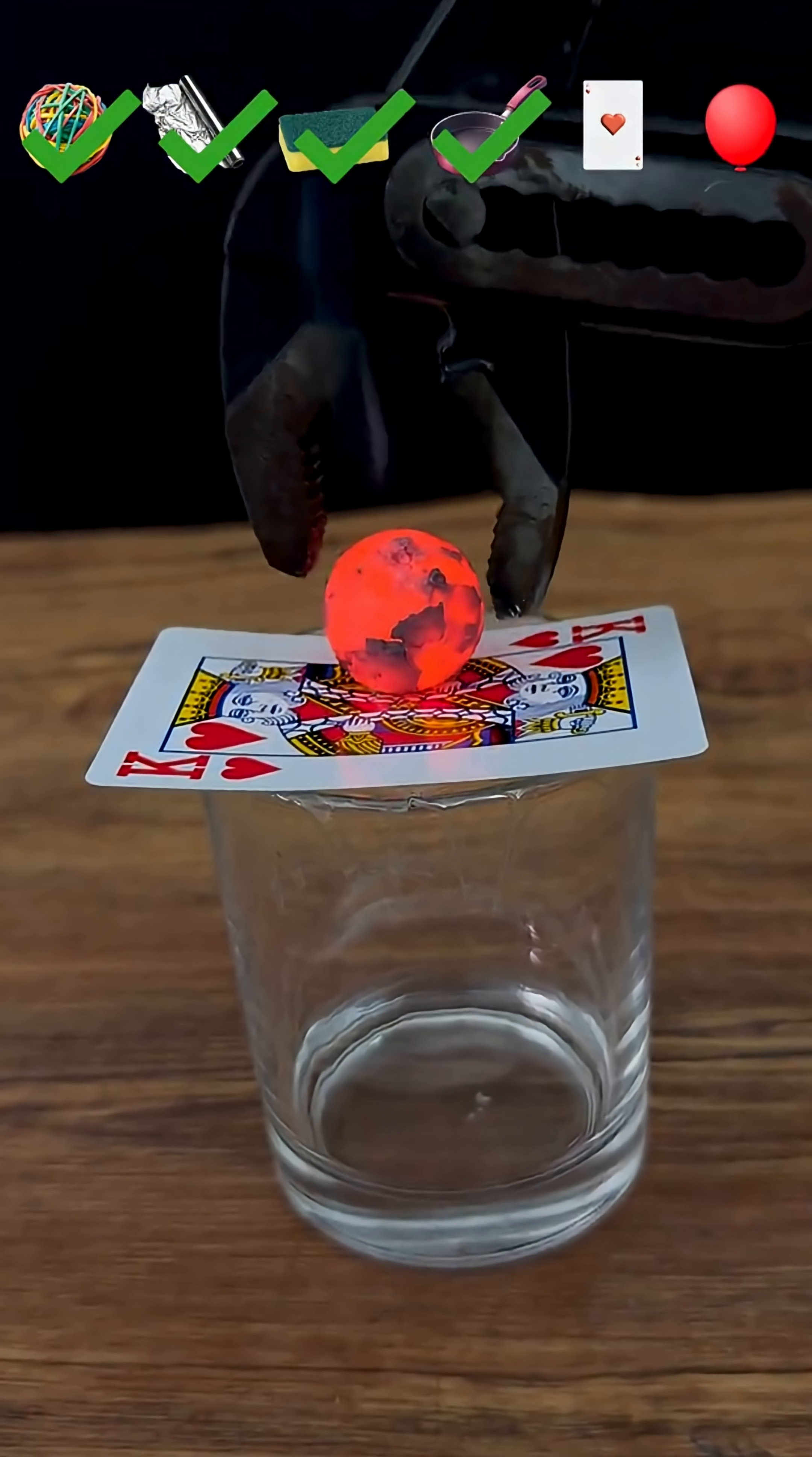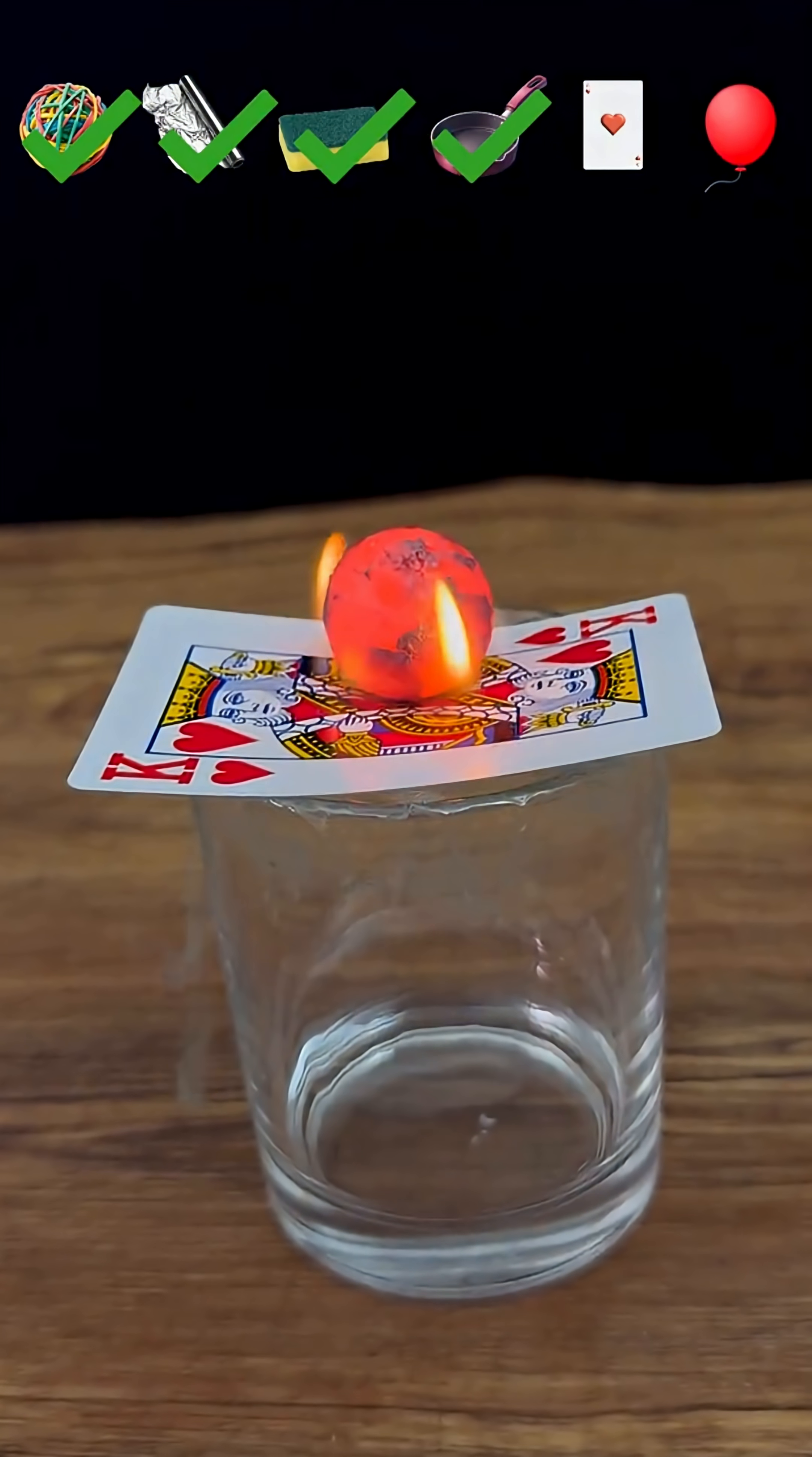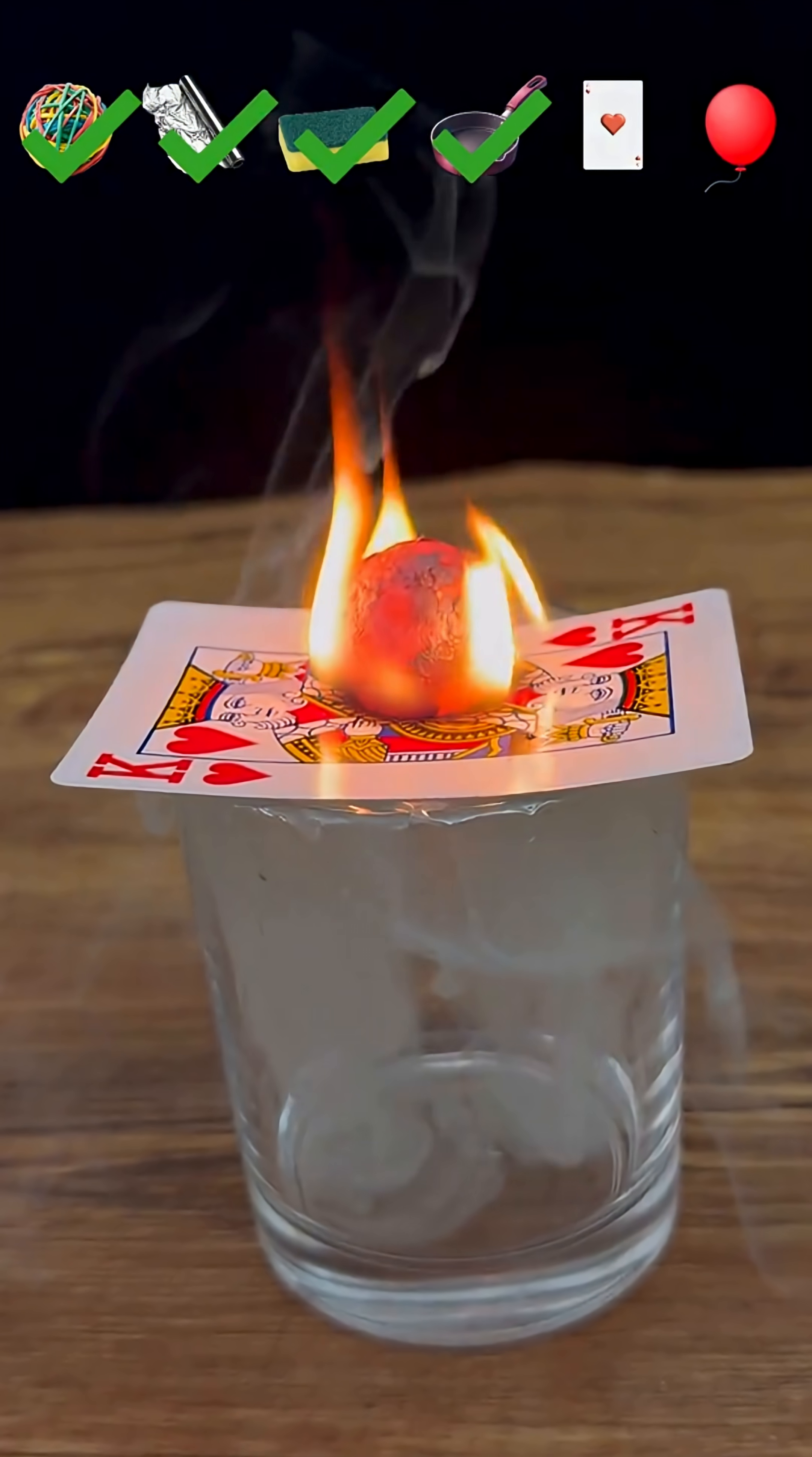Creating thick white smoke. The plastic melts entirely beneath the ball, leaving behind a smooth, perfectly formed hole.